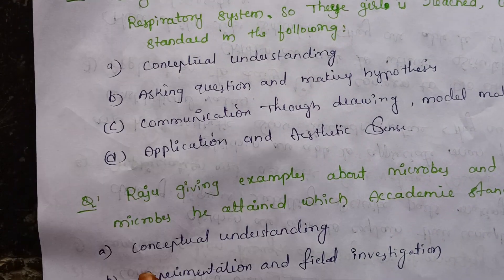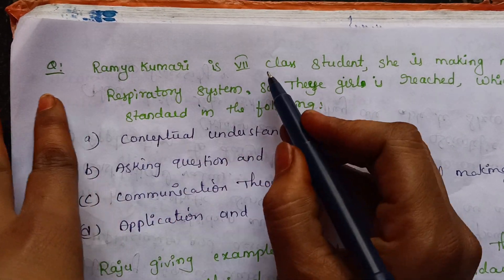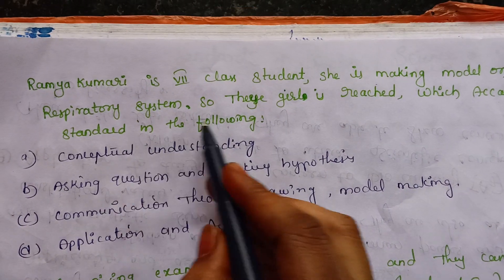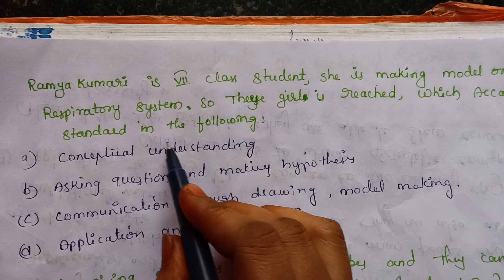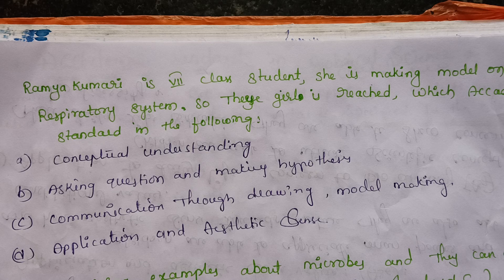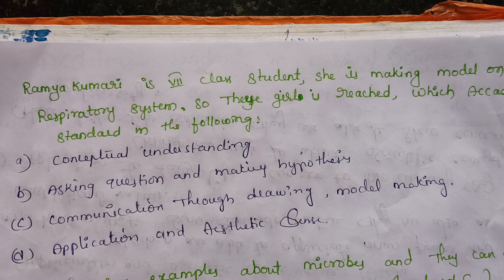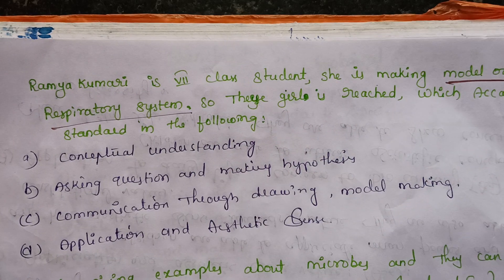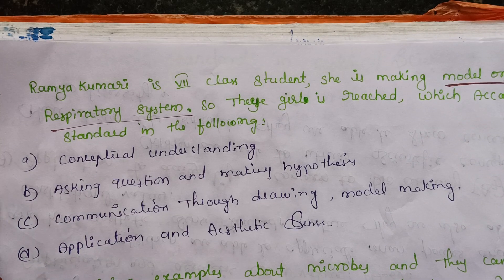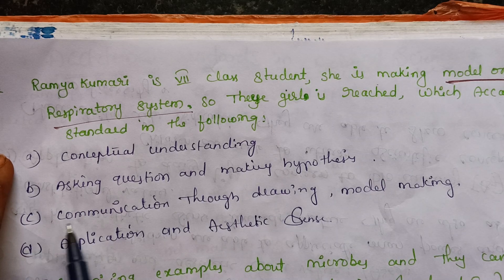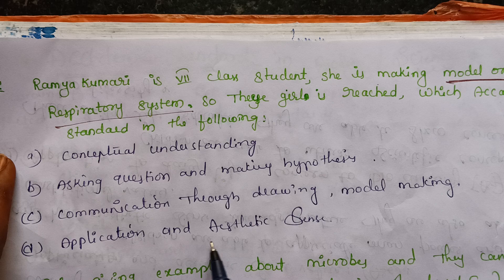The first question is: Ramya Kumari is a seventh class student. She is making a model on the respiratory system. Which academic standard has she reached? Option A: conceptual understanding. Option B: asking questions and making hypothesis. Option C: communication through drawing and model making. Option D: application and aesthetic sense.